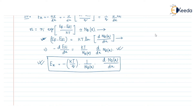This is all about the electric field that has been developed inside the semiconductor throughout its length due to non-uniform doping. Thank you.